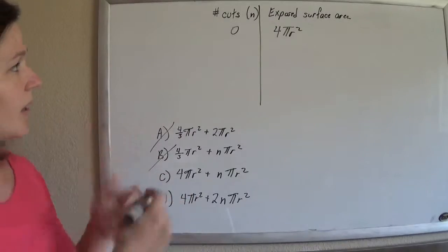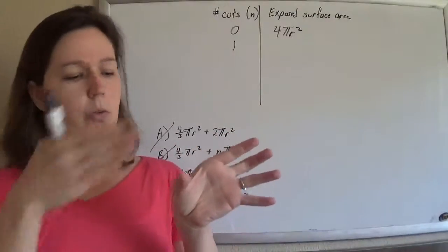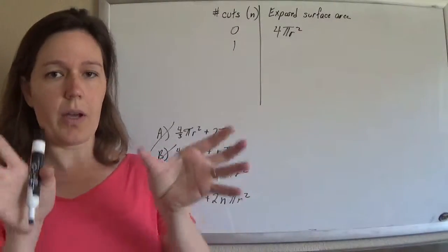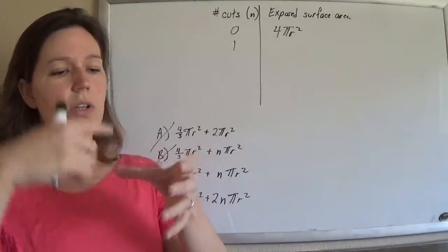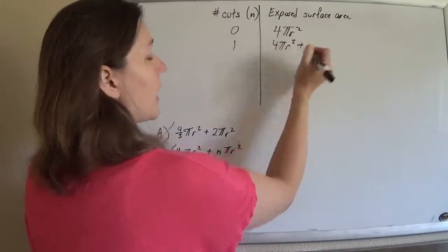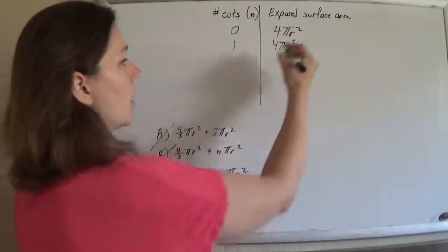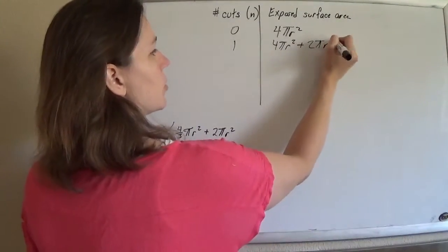If we cut it once, cut it once through the center and open it up, you've created two great circles that are now visible. So you still have the full 4πr², plus you've got two circles. So plus 2πr².